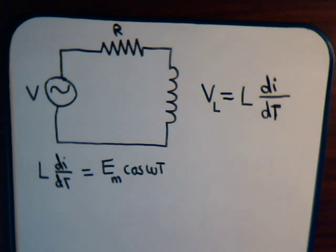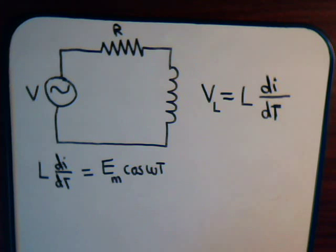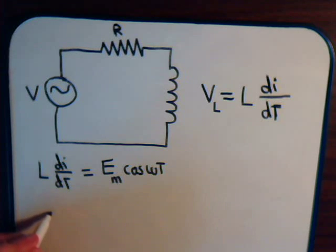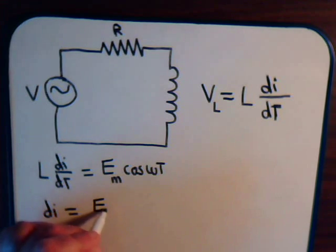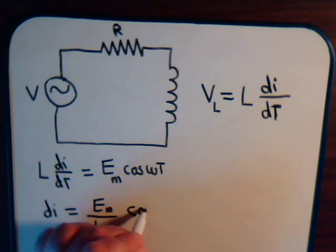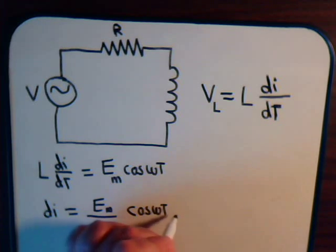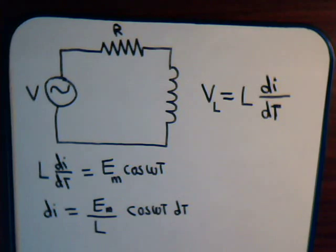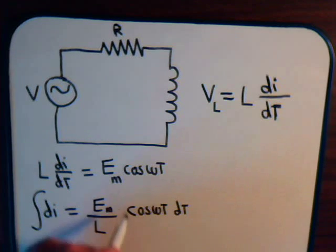And we want to know: if this is the voltage induced across the coil, what will be the current? So we modify both sides by dT and divide by L to get dI equals Em divided by L times the cosine of omega T dT. Now we integrate to find an expression for I, the current. These two are constants, so they can be outside of the integral.